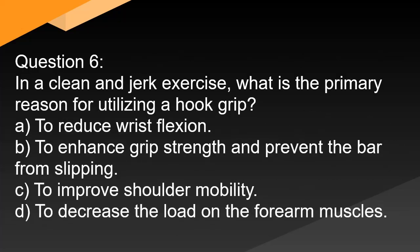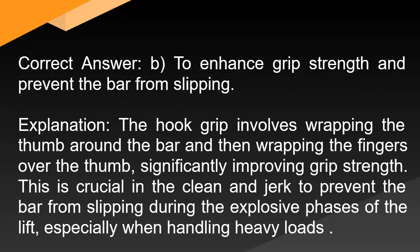Question 6: In a clean and jerk exercise, what is the primary reason for utilizing a hook grip? A. To reduce wrist flexion. B. To enhance grip strength and prevent the bar from slipping. C. To improve shoulder mobility. D. To decrease the load on the forearm muscles. Correct answer: B. To enhance grip strength and prevent the bar from slipping. The hook grip involves wrapping the thumb around the bar and then wrapping the fingers over the thumb, significantly improving grip strength. This is crucial in the clean and jerk to prevent the bar from slipping during the explosive phases of the lift, especially when handling heavy loads.